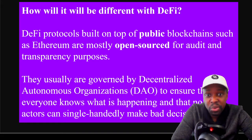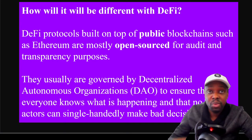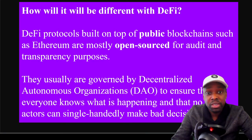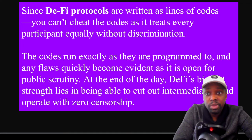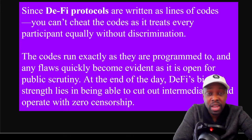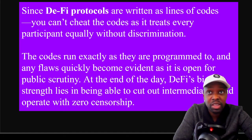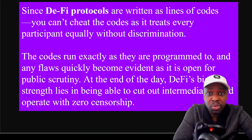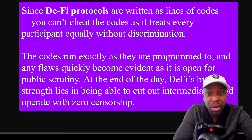DeFi protocols are usually governed by a Decentralized Autonomous Organization — a DAO — to ensure everyone knows what is happening and no bad actor can single-handedly make bad decisions. For example, you can own a token in Uniswap, a trading protocol, and actually have a vote in the outcome of Uniswap. Since DeFi protocols are written as lines of code, you can't cheat the code — it does exactly what it's supposed to do and treats everyone equally. If the code has a flaw and it's exploited, that's the risk you take in DeFi — it's personal responsibility. DeFi's biggest strength is cutting out intermediaries and operating with zero censorship.